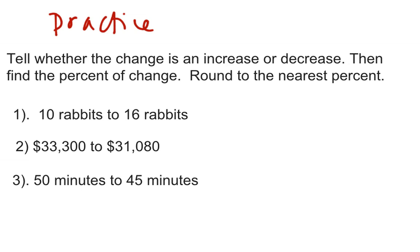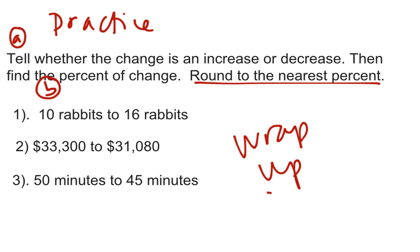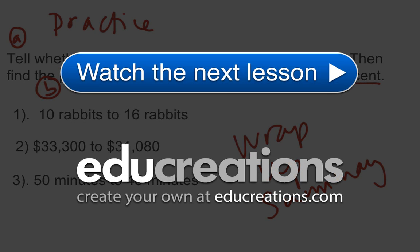Three practice problems all have the same instructions. Tell whether the change is an increase or decrease, so it's two parts. That's part one. And then find the percent of change, whether it's an increase or decrease, then you have to calculate the percent, and then round to the nearest percent. So number one, 10 rabbits to 16 rabbits. Number two, $33,300 to $31,080. And number three, 50 minutes to 45 minutes. And then remember to do your wrap-up summary.